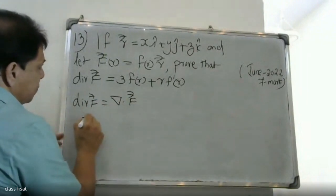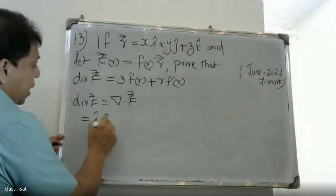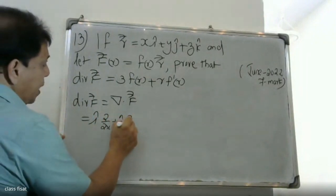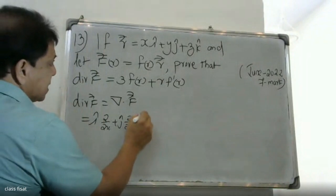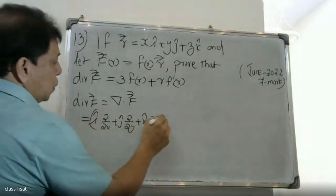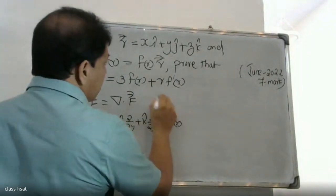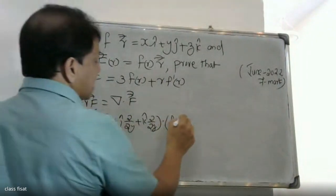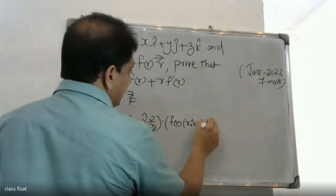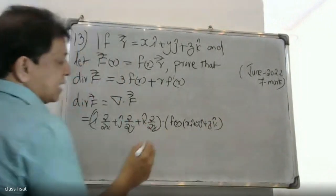We write the divergence operator as i ∂/∂x plus j ∂/∂y plus k ∂/∂z, dotted with f(r) times vector r, where vector r is x·i plus y·j plus z·k.